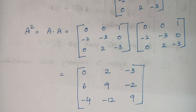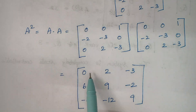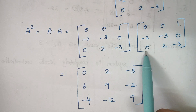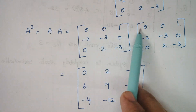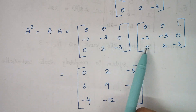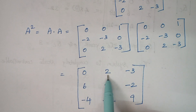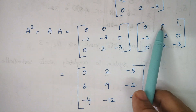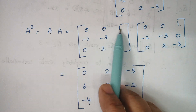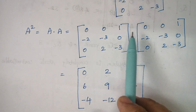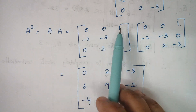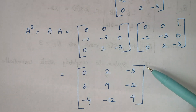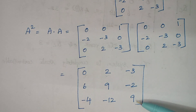I hope you are familiar with matrix multiplication. To get the first term, this row gets multiplied with this column: 0×0 + 0×(−2) + 1×0 = 0. To get the next number, the same row multiplied with the second column: 0×0 + 0×(−3) + 1×2 = 2. And finally, 0×1 + 0×0 + 1×(−3) = −3. Complete the rest of the matrix multiplication the same way.